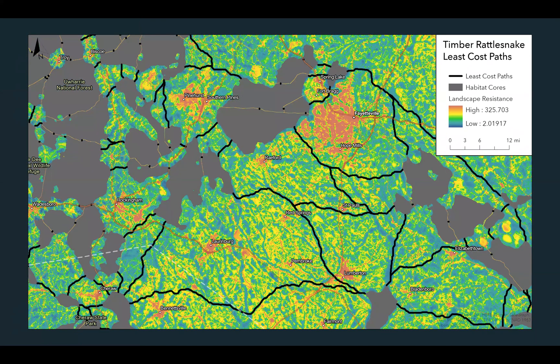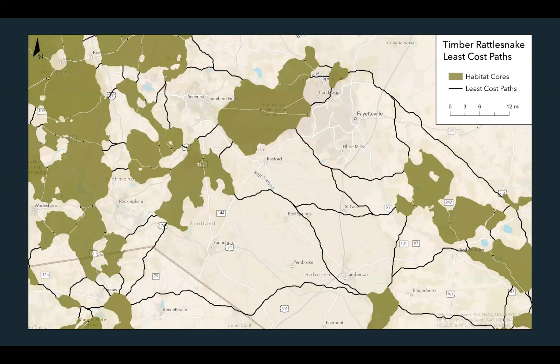Let's start with the simplest approach: cost paths, where you calculate the single line representing the lowest accumulated resistance path between each relevant pair of nodes. This is easy to do with the program Linkage Mapper. It's very quick and simple, and the trade-off is that almost no one believes that real animals are capable of finding and using a solitary line of pixels across the landscape.